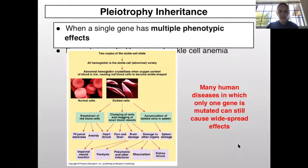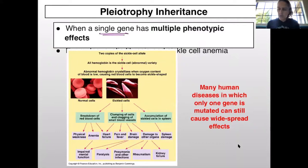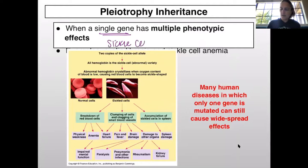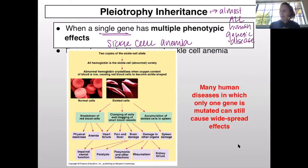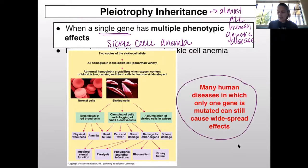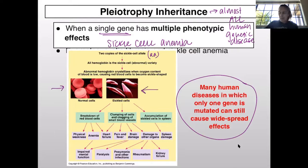Another concept is pleiotropy — a single gene giving multiple phenotypic effects. Almost all human genetic diseases are pleiotropic, meaning one affected gene causes many different effects. For example, sickle cell anemia: if you are recessive for the sickle cell allele and have the disease, your red blood cells are sickled, causing a huge number of effects ranging from kidney failure to impaired mental function to paralysis.